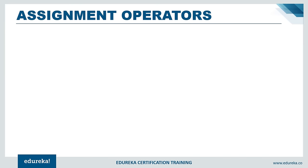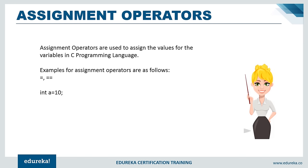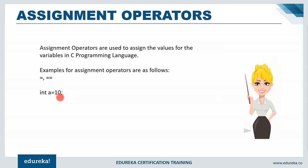Assignment operators are used to assign values to variables in C programming. For example: int a = 10, where int is the data type and a is the variable name. The = operator assigns the value 10 to variable a. Using == (double equals) means you are comparing values on LHS and RHS — for example, if a == b, the compiler executes certain commands if the values are equal.